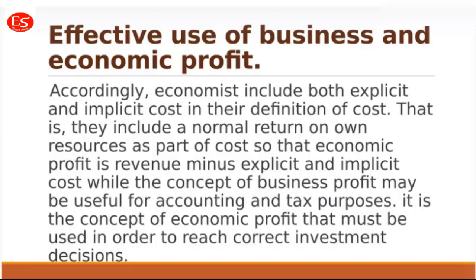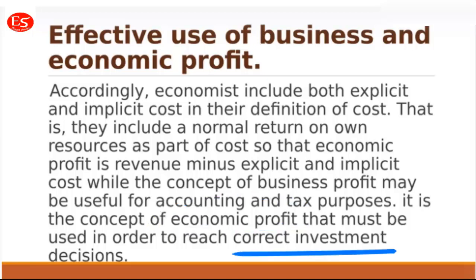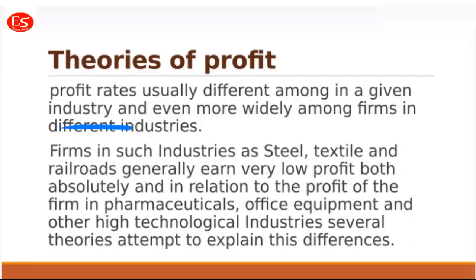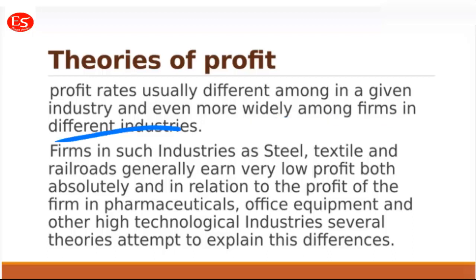Economists include both explicit and implicit costs in the definition of cost, incorporating the normal return on all resources. Business profit is useful for accounting and tax purposes, whereas economic profit is required for making correct investment decisions. Now let's move to the theories of profit, which explain why profit rates differ among industries and firms.